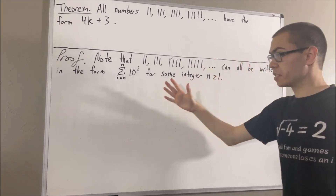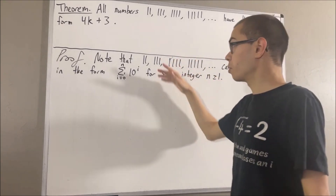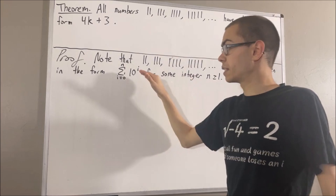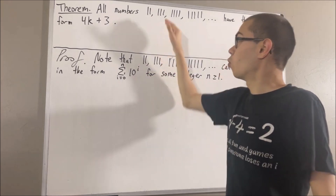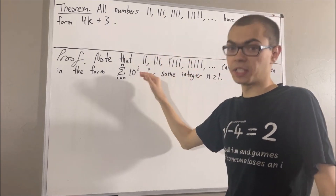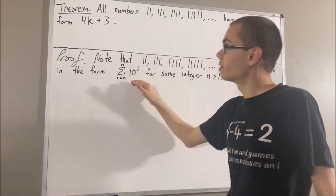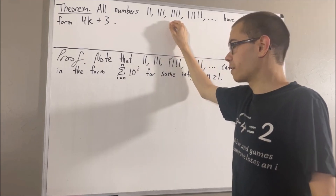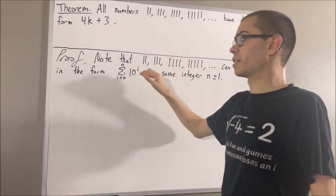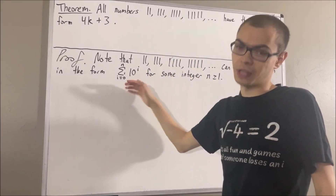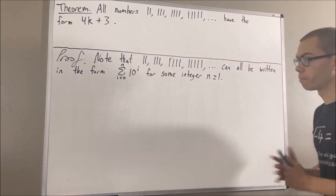So what this means is, for example, 11 is equal to 1 plus 10, 111 is equal to 1 plus 10 plus 100, 1111 can be written as 1 plus 10 plus 100 plus 1000, and so on and so forth.